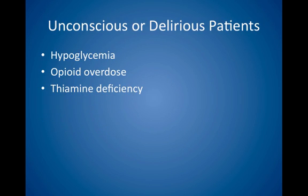For the unconscious or delirious patient in the emergency department with no history or signs of trauma, consider empiric treatment for hypoglycemia with glucose, treatment for opioid overdose with naloxone, and treatment for thiamine deficiency. Remember that thiamine should be given before glucose in a suspected alcoholic patient. Other commonly tested causes include alcohol, illicit or prescription drugs, diabetic ketoacidosis, stroke, epilepsy or a postictal state, and subarachnoid hemorrhage.